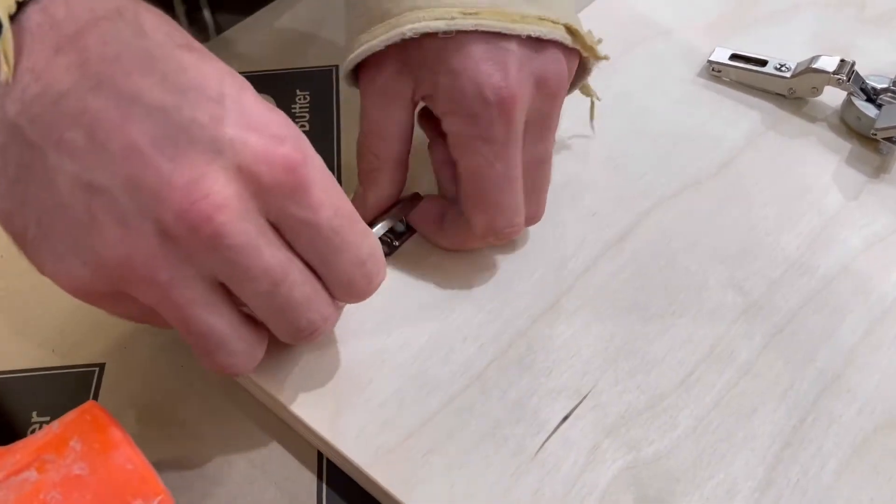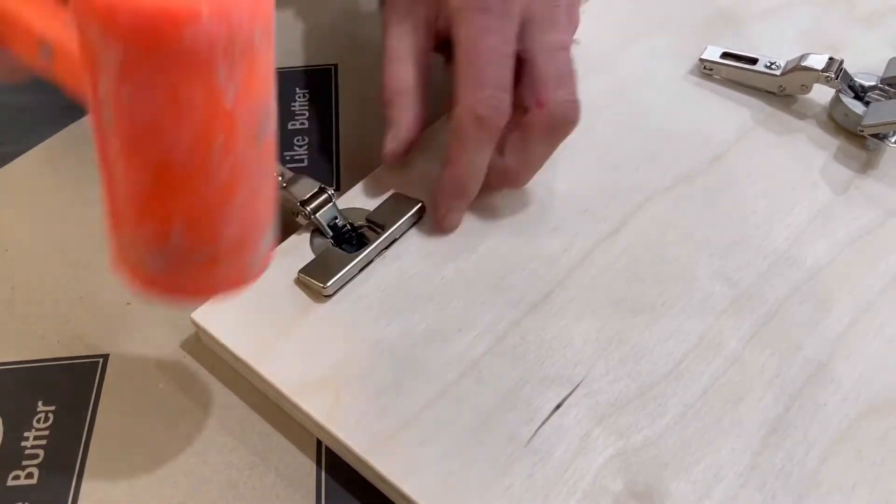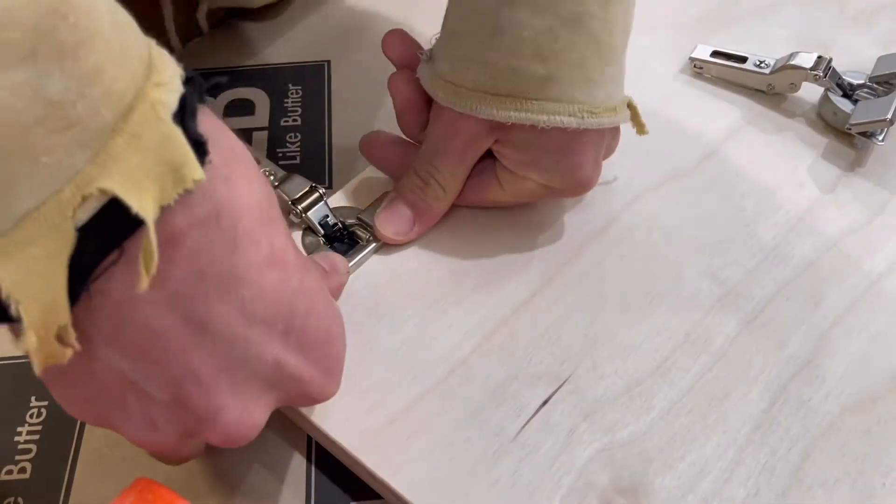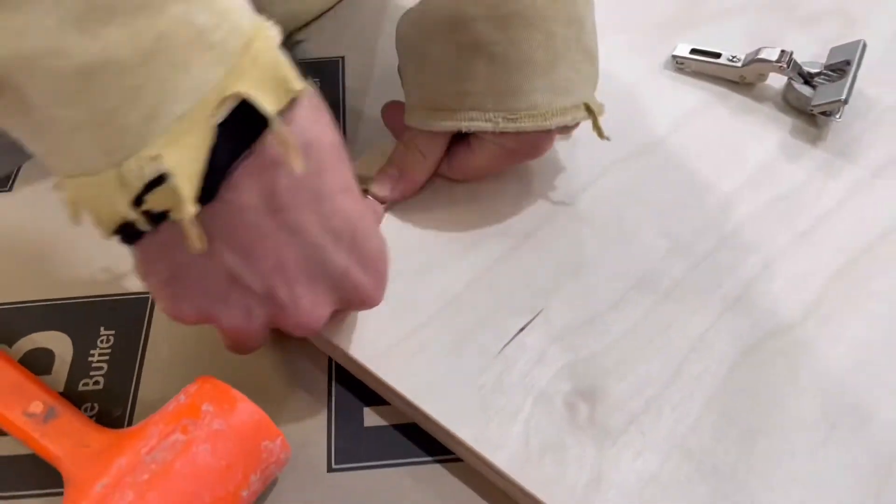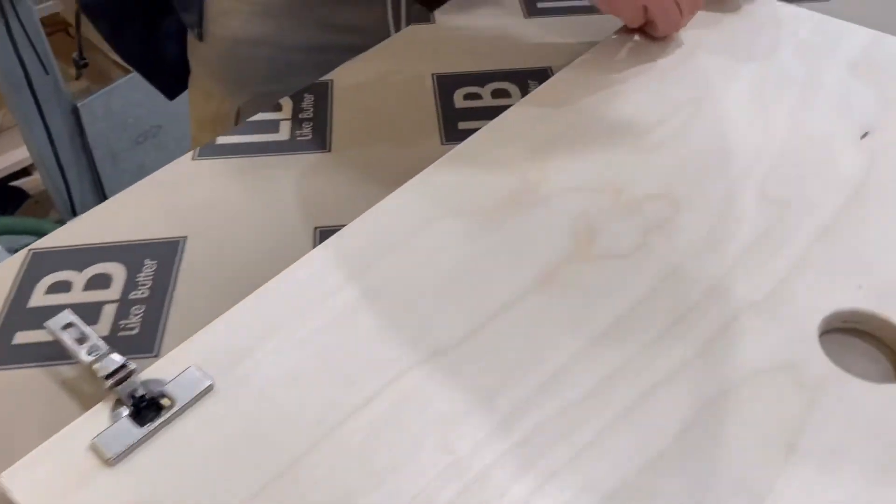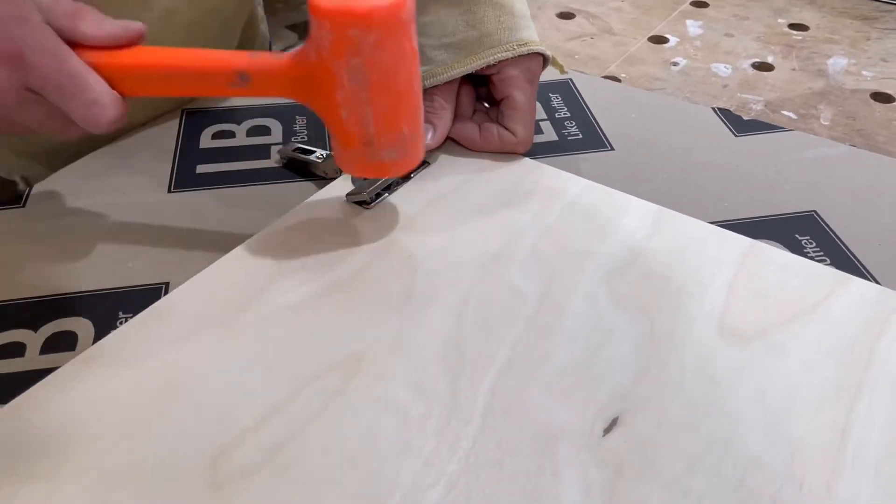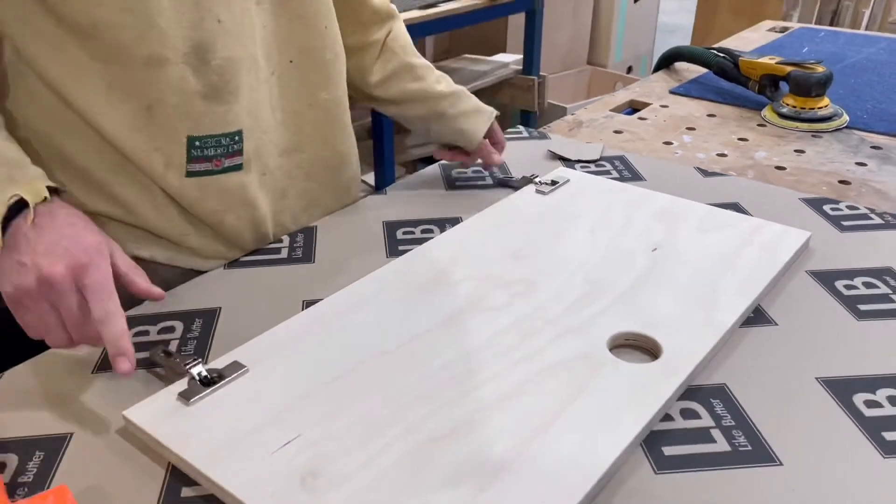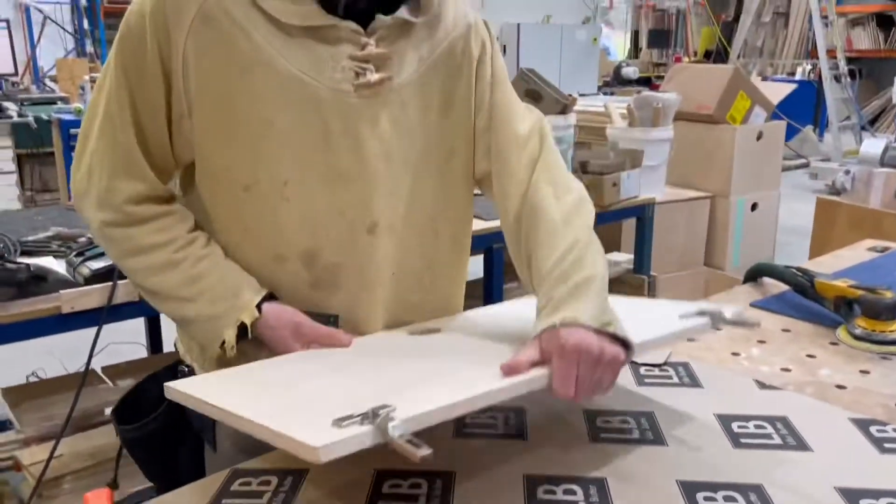But once it's firm and in place, sometimes, depending on the material, you can just push this down by hand. You'll hear that click. Sometimes in harder materials like the birch, you may find that you just need a little bit of persuasion, and then you're ready to flip that onto your crate.